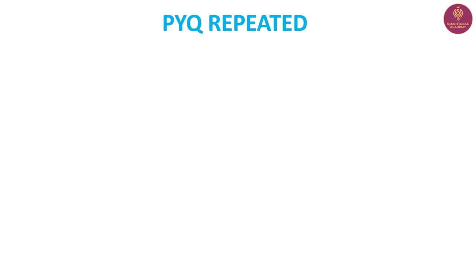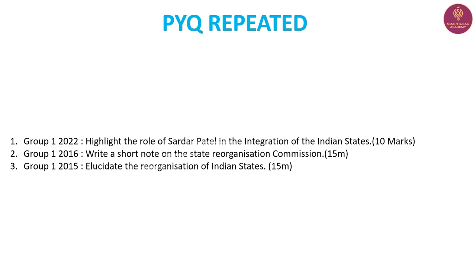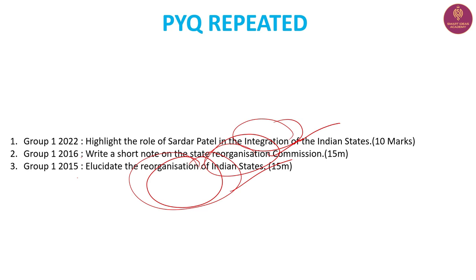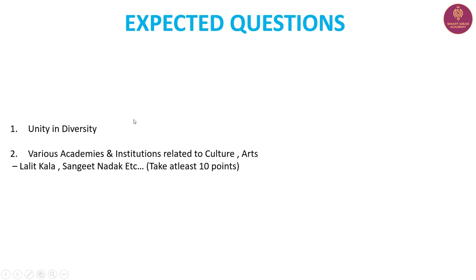This topic is a little limited but important. The leaders of the national renaissance are important. Let's talk about state reorganization — in 2022, 2016, and 2015 there were questions on the integration of states and the State Reorganization Commission. Unity and diversity in general is also discussed here. You need to take at least 5 key points.